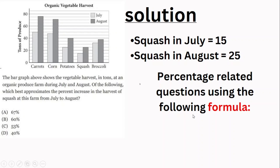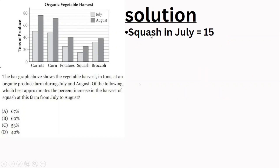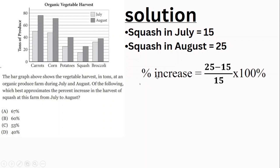Using the single formula for percentage change: percentage change is equal to new value minus old value, over old value, times 100%. Percentage increase equals new value minus old value over old value times 100%.